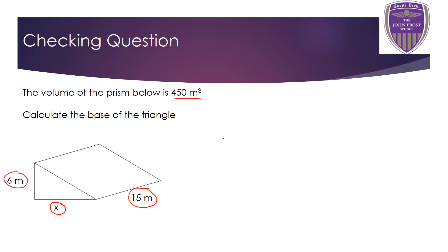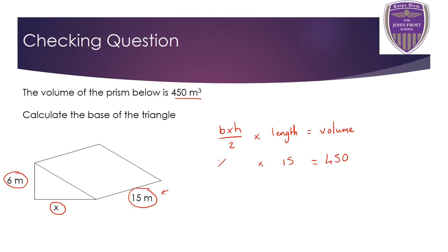Welcome back. The volume formula for a triangular prism is: base times height divided by 2, multiplied by the length. The volume is 450 meters cubed, the length is 15, and the triangle area is x times 6 divided by 2. So x times 6 divided by 2, all multiplied by 15, equals 450. We work backwards step by step.